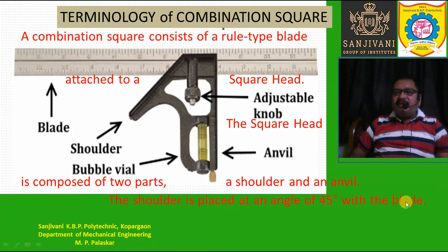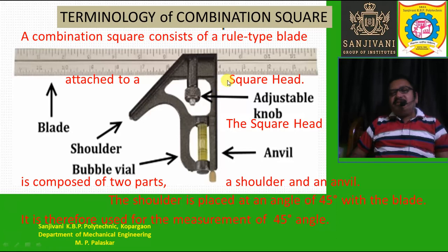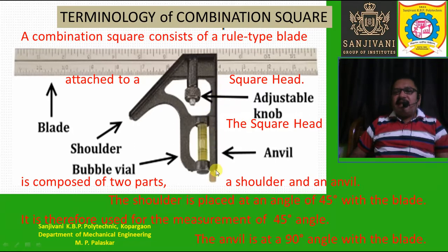The shoulder is at 45 degrees with the blade and is used for measurement and ensuring 45-degree angles. The anvil surface is used to check or ensure 90-degree surfaces. The anvil is at 90 degrees to the blade when it is inserted inside the square head. This straight part is the blade or rule, and this part is the square head.